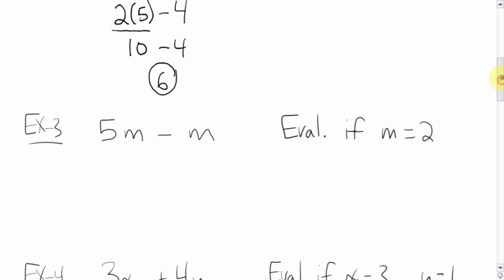Alright. Now, what about this? 5m minus m. Evaluate, just eval, if m equals 2. So we're going to sub in a 2 for m here and here. Again, directly underneath. Write down the 5. Sub in the 2 for m and the 2 here as well for that m. 5 times 2 is what we end up getting. That's 10 minus 2 is 8. Simple, simple.